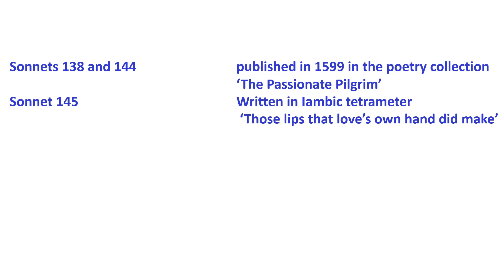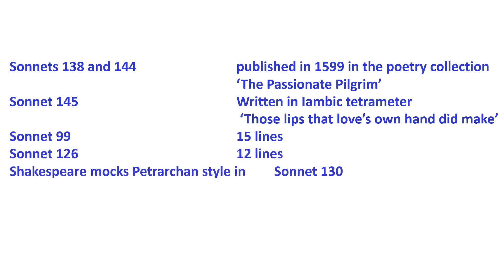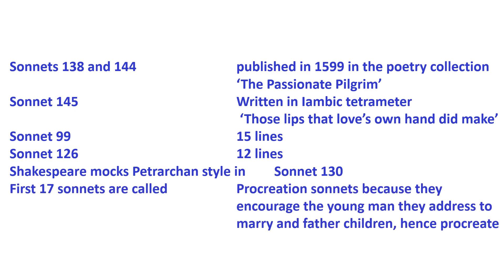Sonnet 145 is written in iambic tetrameter with the opening line 'Those Lips That Love's Own Hand Did Make.' Sonnet 99 has 15 lines, and Sonnet 126 has 12 lines. Shakespeare mocks the Petrarchan style in Sonnet 130. The first 17 sonnets are called procreation sonnets because they encourage the young man to marry and father children.